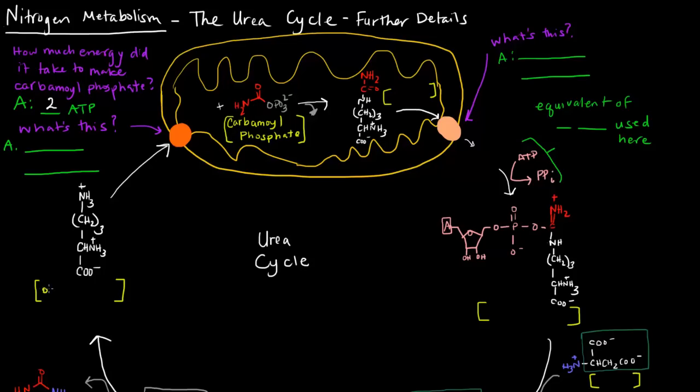This molecule here is called ornithine. Ornithine is an amino acid because it has an alpha-carboxyl group here, an alpha-amino group here, and an alpha-hydrogen, and then an R group. So it's an amino acid.